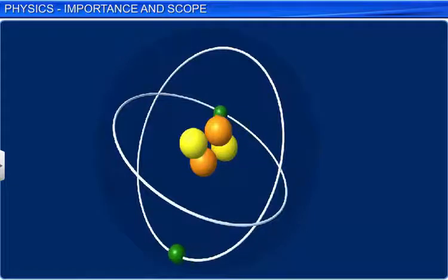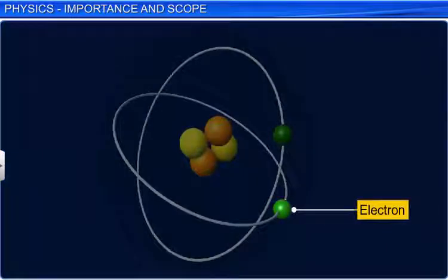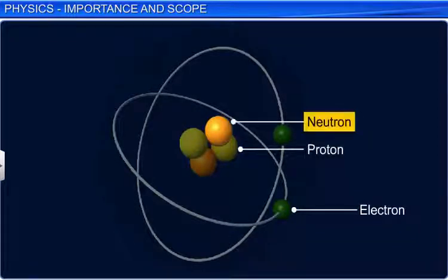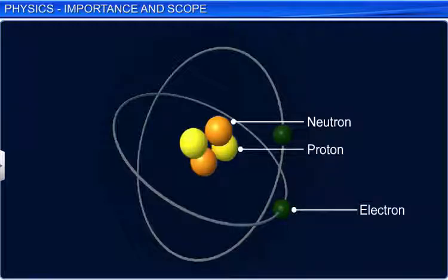An atom consists of three subatomic particles, namely electron, proton and neutron. The force that binds protons and neutrons is the strong nuclear force.